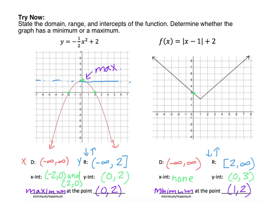Our second equation is an absolute value function — notice the V-shaped graph. Remember that all absolute value functions have a domain of negative infinity to positive infinity. For the range, the lowest y value the graph touches is 2, and it goes up forever, so the range is [2, positive infinity). The x-intercept is none, since the graph does not touch the x-axis. The y-intercept is at (0, 3). This graph has a minimum, and that minimum is located at the ordered pair (1, 2).